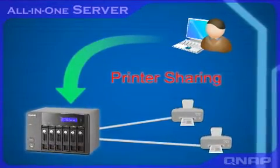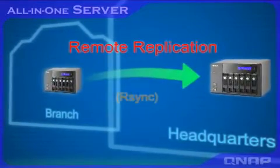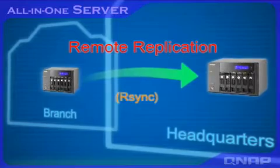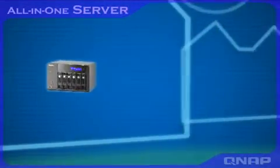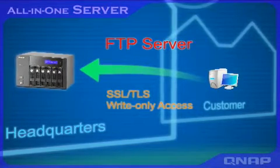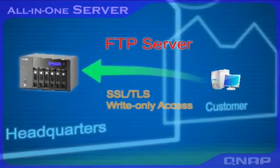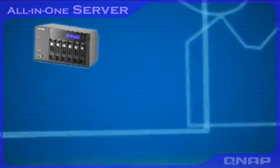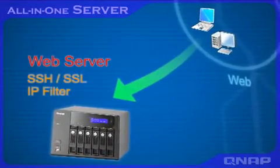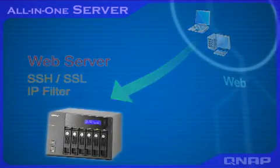The NAS supports up to 3 USB printers for sharing in the office. Data on the NAS can be backed up to another TurboNAS or Rsync server over LAN or WAN. Customers and third-party partners can access the NAS by FTP; you can configure write-only access rights to prohibit reading or editing data by FTP. You can create your web page, forum, or other web applications using the web server, and connections can be secured by SSH and SSL.